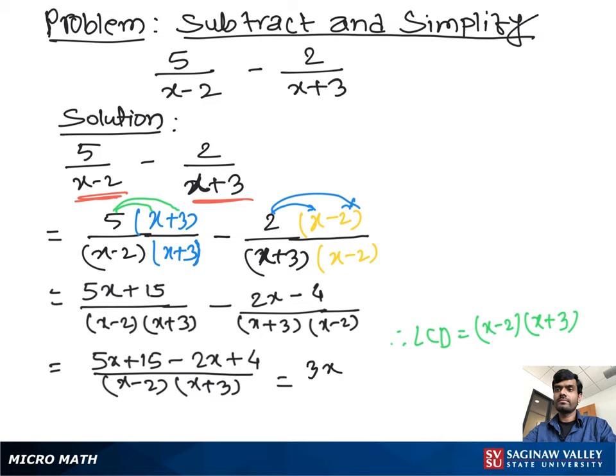So we get 3x plus 19 over x minus 2 times x plus 3, and this is our final answer.